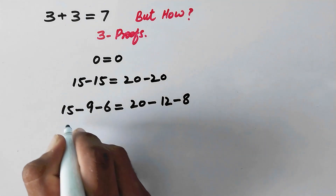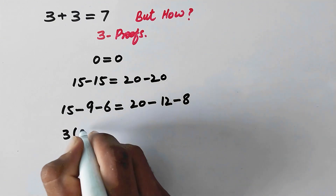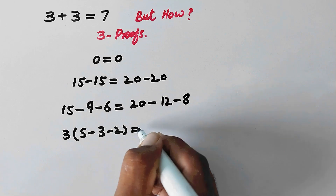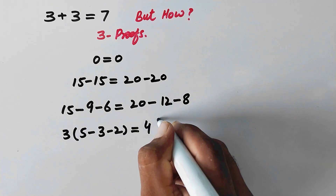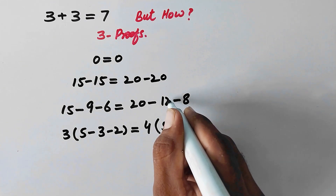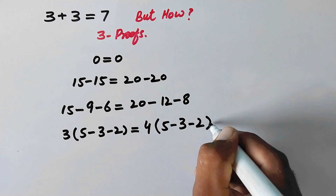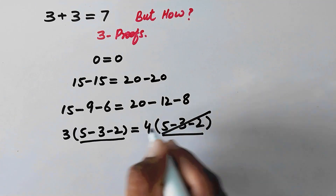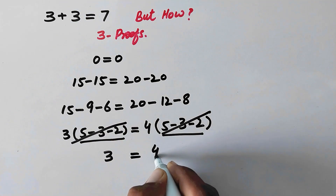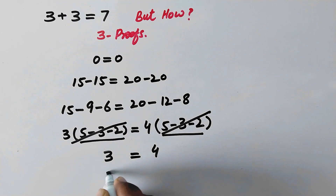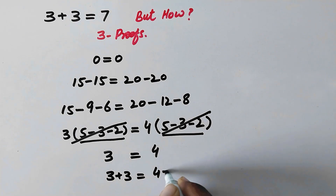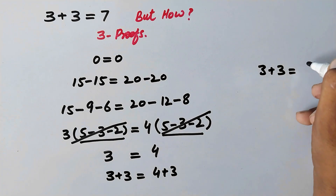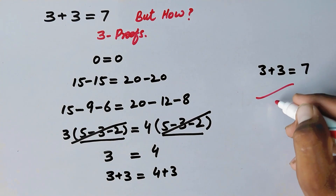Now here we will take 3 as common from the left side: 3 times (5 minus 3 minus 2) is equal to, and we will take 4 as common from the right side: 4 times (5 minus 3 minus 2). Here we can see that the bracketed value is the same on both sides, so they cancel each other. We are left with 3 is equal to 4. Now we add 3 on both sides, giving us 3 plus 3 is equal to 4 plus 3 is equal to 7. And here is our second proof.